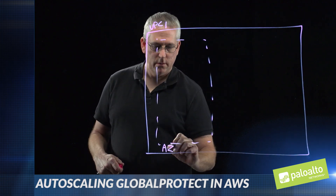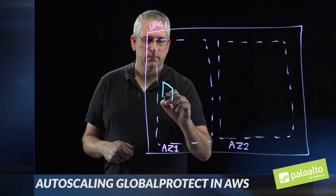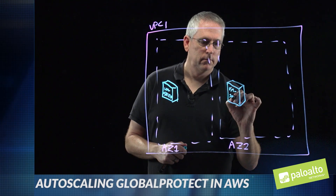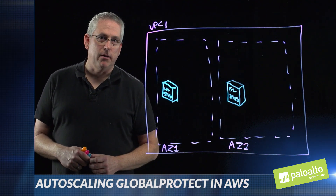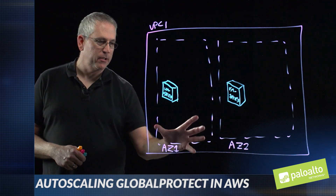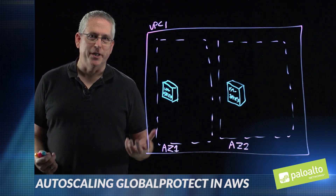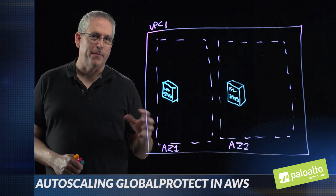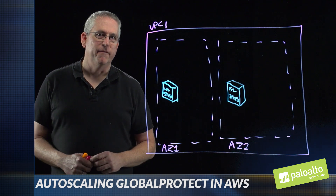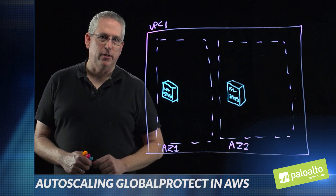Now I'm going to show some details of what AWS calls a Virtual Private Cloud, or VPC, and specifically how we leverage their redundancy and auto scaling functionality to make our Global Protect solution scale as needed. I have a VPC in AWS with two availability zones, AZ1 and AZ2, which gives me redundancy within a specific region. As my minimum footprint for my Global Protect solution I have a VM series Palo Alto Networks virtual firewall in each availability zone.